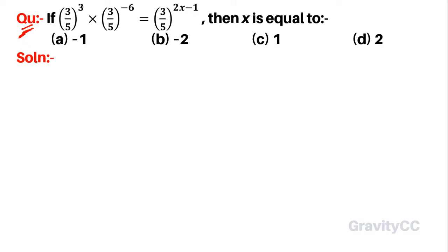Question: if (3/5)^3 multiplied by (3/5)^(-6) is equal to (3/5)^(2x-1), then x is equal to? Let me write down what is given.